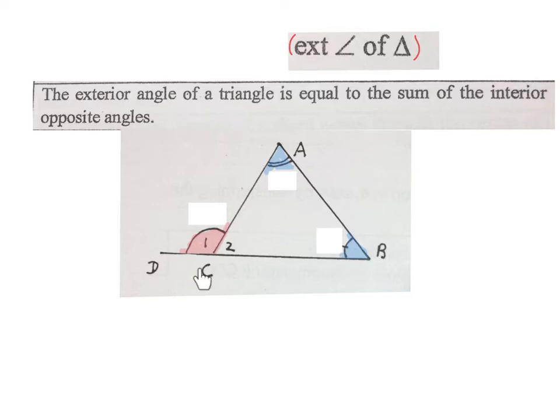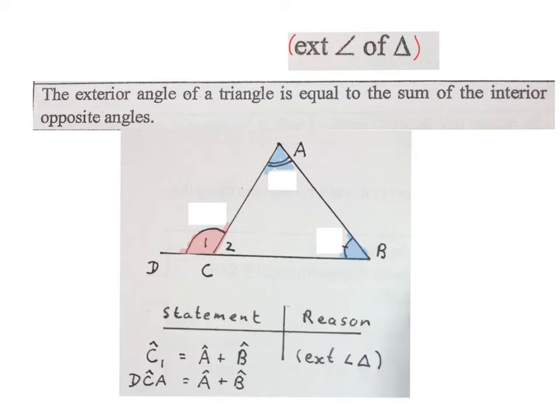Looking at this triangle, the red angle, the exterior angle of this triangle, is the same size as the two blue angles added together. Remember in geometry, if we write something we will write statements and give reasons for our statements. In this case we will write angle C1 is equal to angle A plus angle B, and our reason would be exterior angles of a triangle.